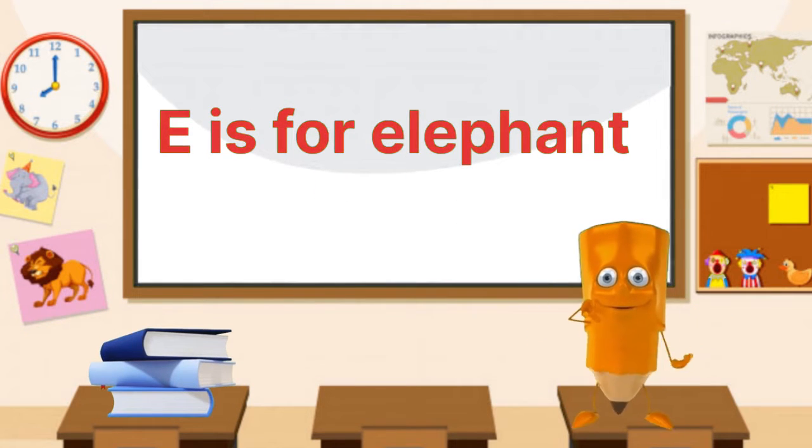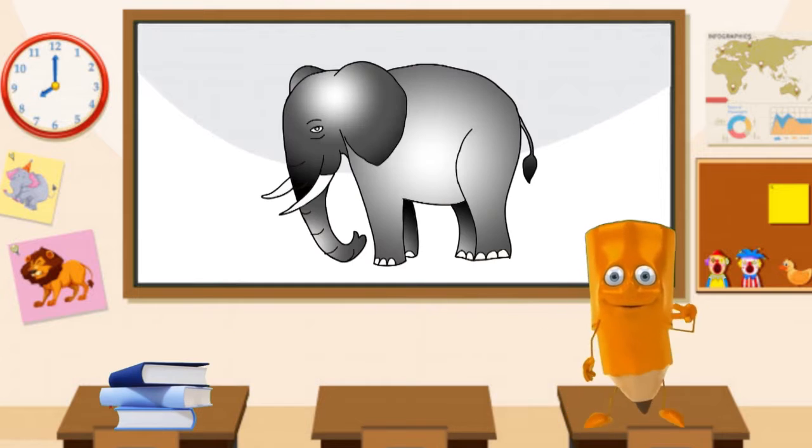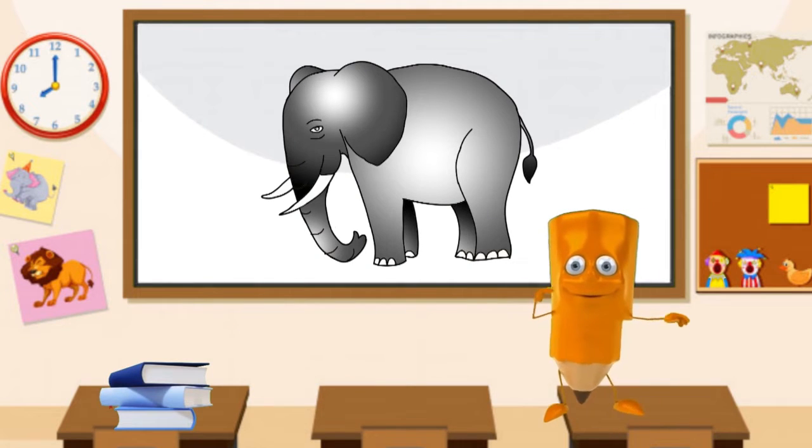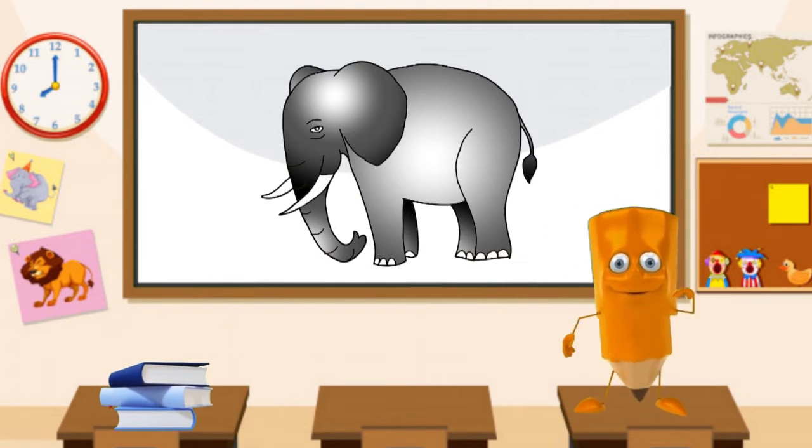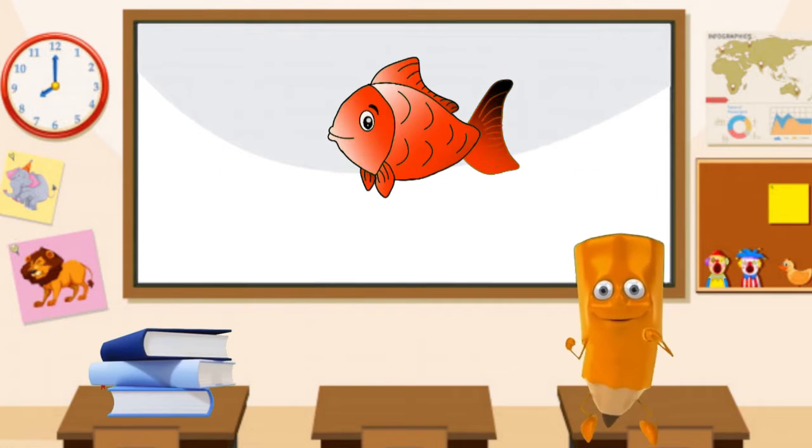E is for elephant. E, E, elephant. F is for face. F, F.